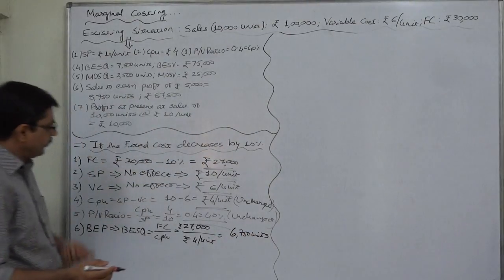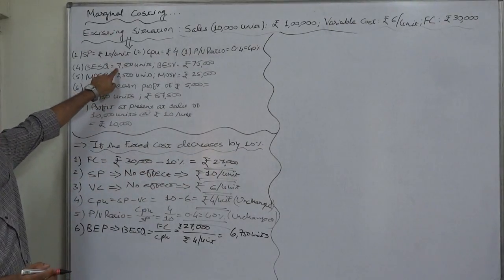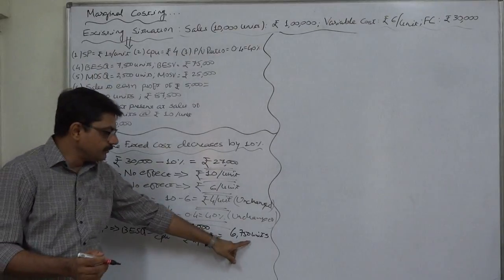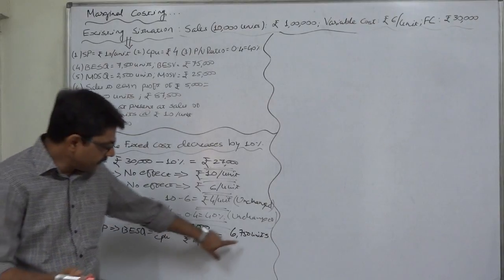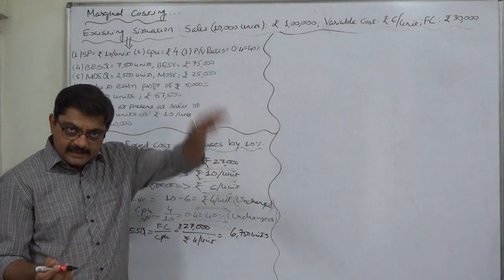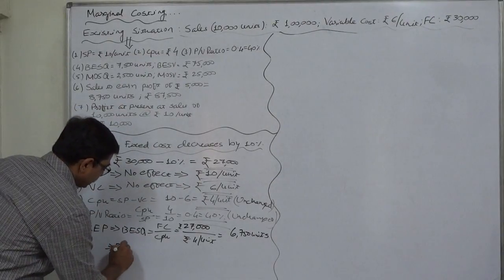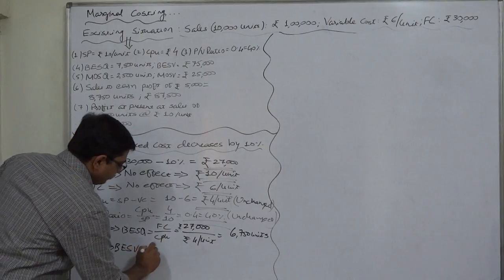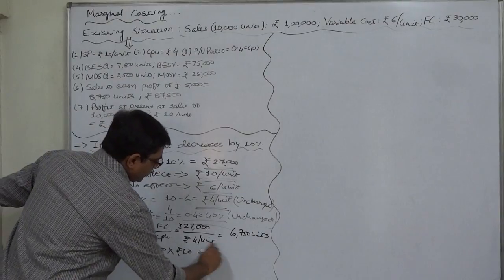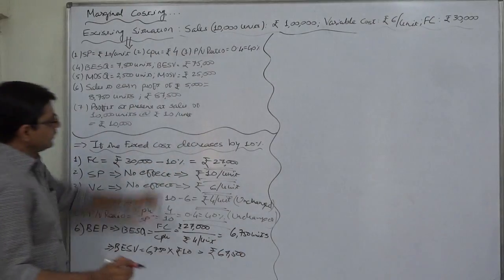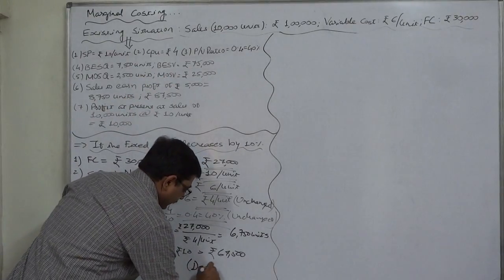Because of the decrease of 10 percent in fixed cost, the break-even point has also decreased by exactly 10 percent. The previous break-even point was 7,500 units; 10 percent of 7,500 is 750, so the new break-even point is 6,750 units — 750 less. Similarly, break-even sales value is 6,750 × ₹10 = ₹67,500, which is exactly 10 percent less than the existing break-even sales value.